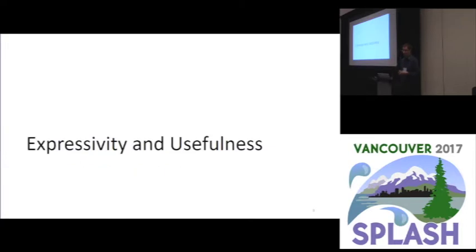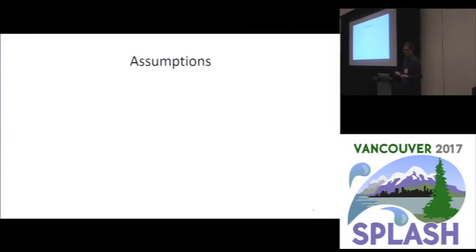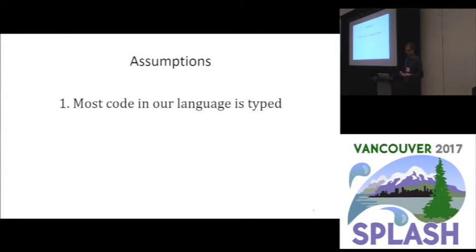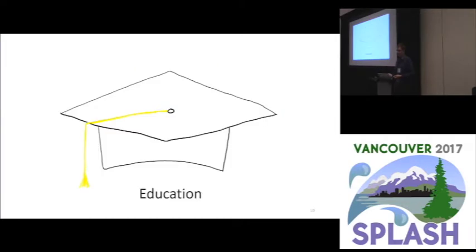Let's start with the most controversial aspect of our work, which is that we intentionally sacrifice some expressivity and yet still claim that we have a useful Gradual type system. This is because we are working with a different set of assumptions and target a different set of applications. The first assumption is that most code in our language is typed. This makes sense in a number of applications, the first of which is education, where it's useful to have standard libraries that are typed for IDE support, for documentation, and for error reporting. But it's also important to be able to experiment, and having to always satisfy a type checker gets in the way of this experimentation.